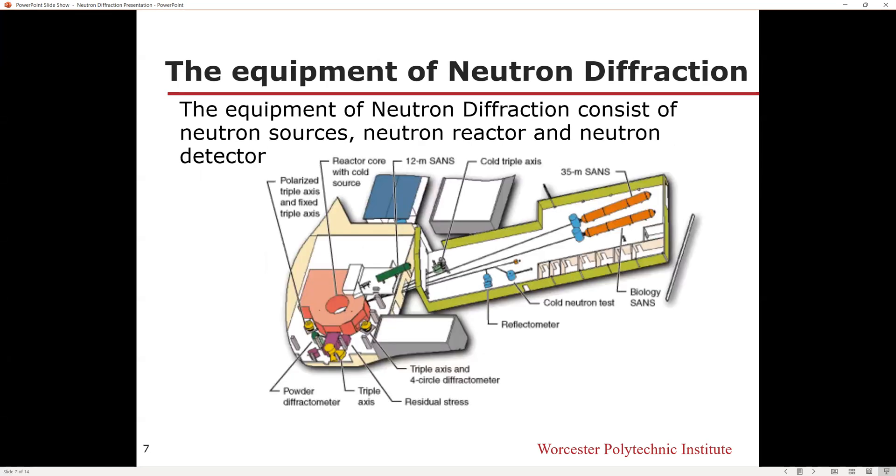The equipment of neutron diffraction consists of neutron sources, neutron reactor, and neutron detector. A neutron source is a device that emits neutrons, and there are many ways it can produce neutrons, like radioisotopes which undergo fission and radioisotopes which decay with high-energy photons co-located with beryllium.